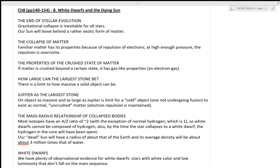There's a section on how large the largest stone can be. So a solid object can only be so massive before gravity really takes in. So Jupiter as the largest stone, an object as massive and as large as Jupiter is the limit for a cold object, one that doesn't undergo fusion, to exist as what we call normal or the uncrushed matter where electron repulsion is maintained.